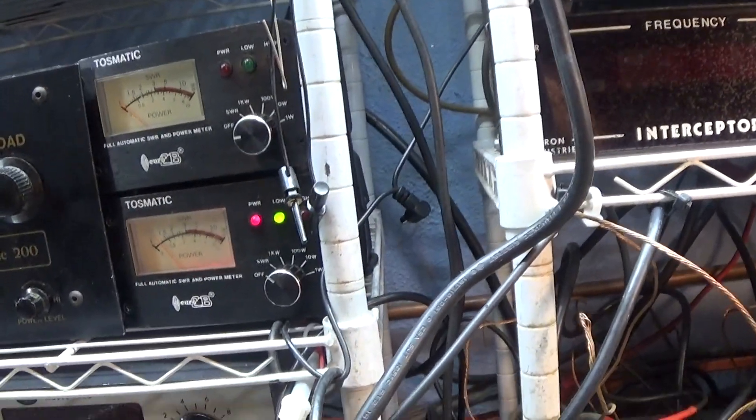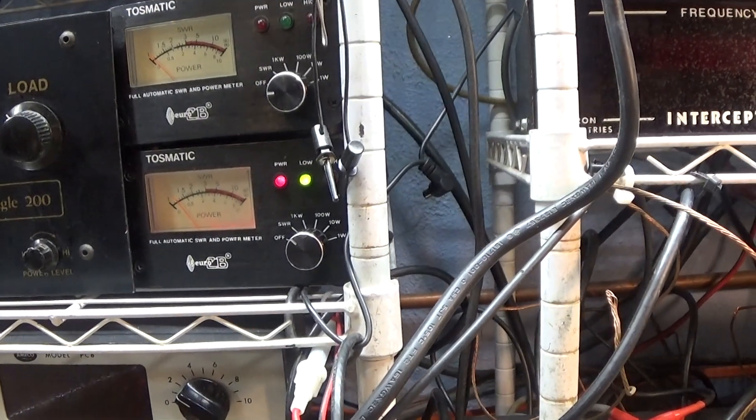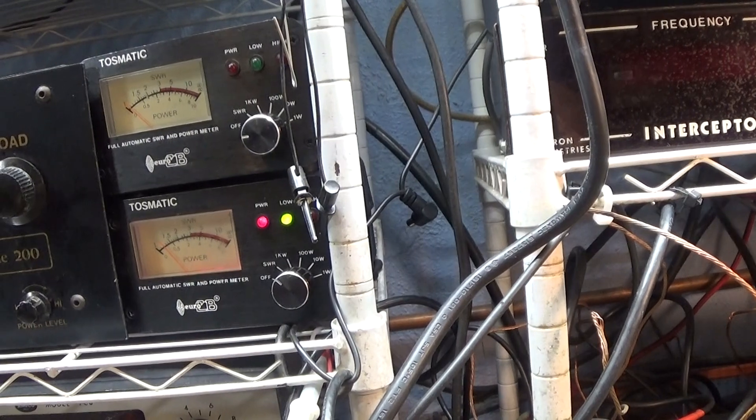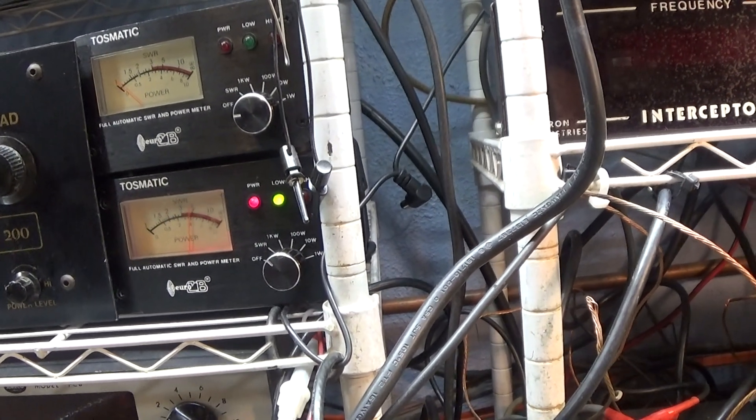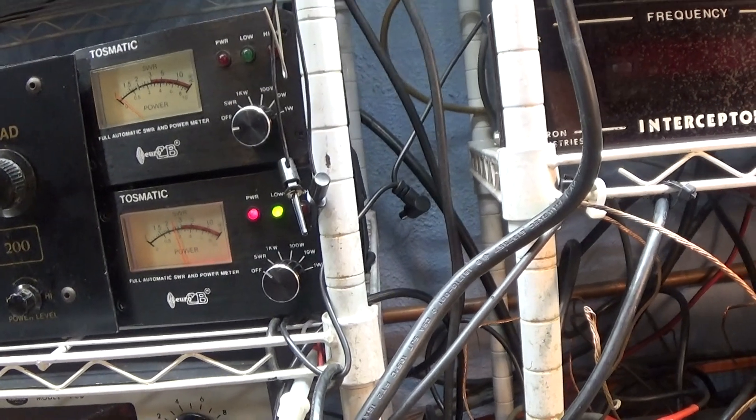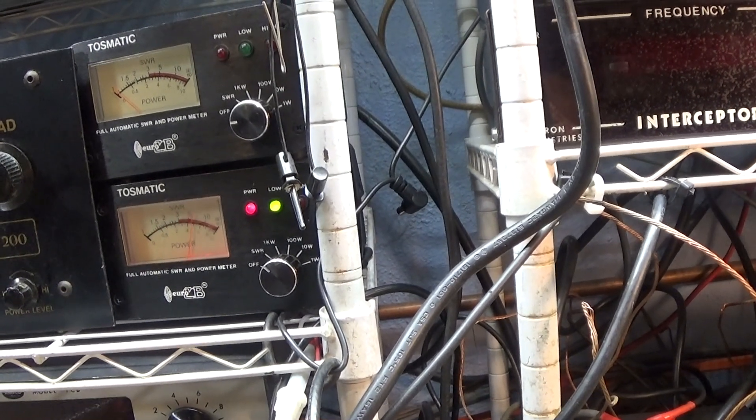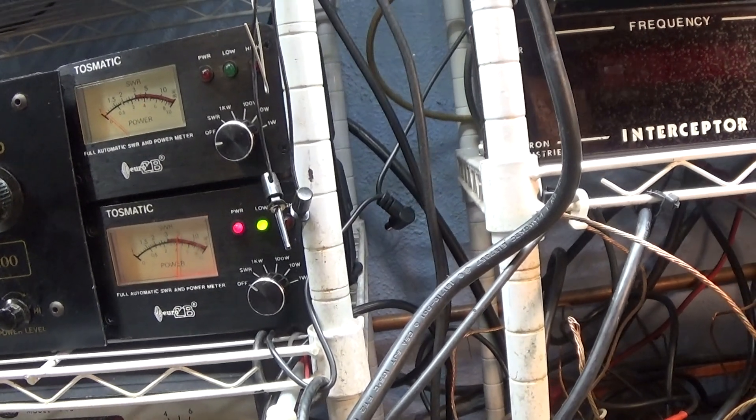So over here I got this automatic SWR watt meter in line and it's on the input side of this amp not the output side. So I'm turning the grid tune or the grid driver over here and you can see the SWR goes way up almost to infinity just tuning this. And as I tune that the watts almost go down to zero.